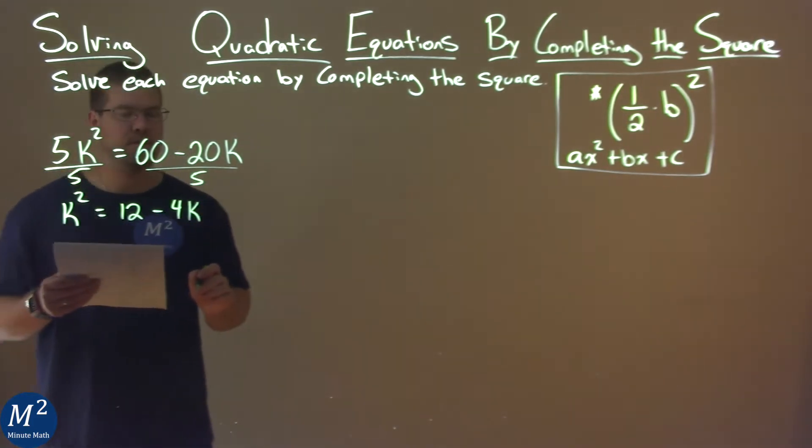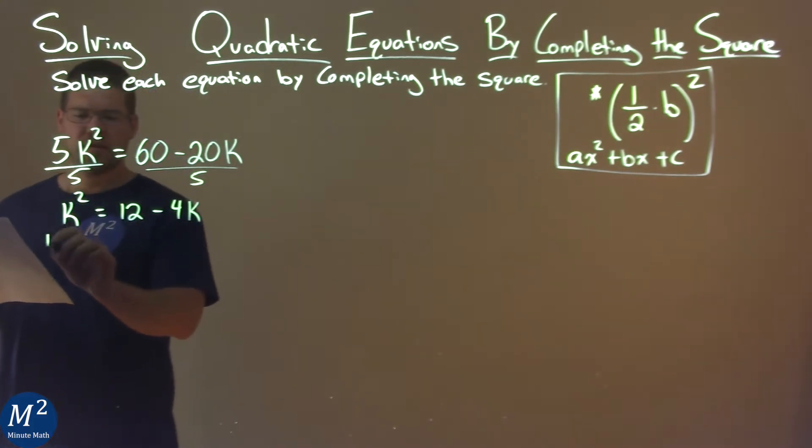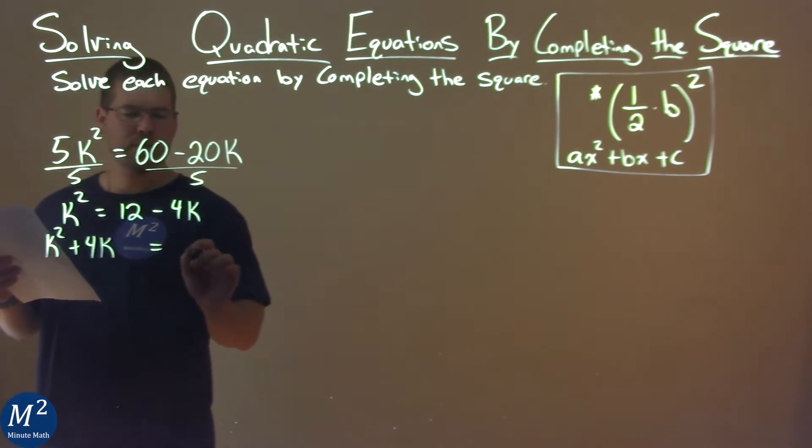This is a lot easier to deal with. I'm going to add 4k to both sides, and I have k squared plus 4k, leaving a space here, is equal to 12.